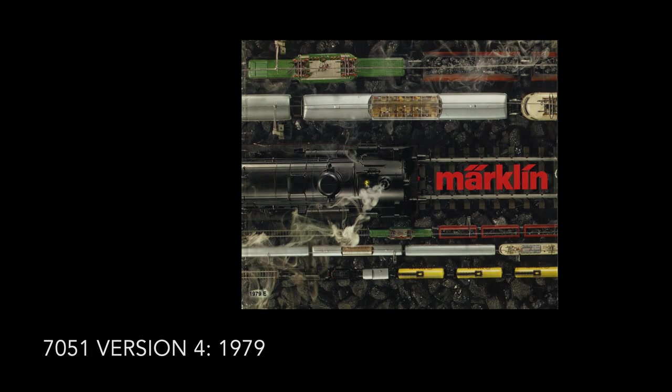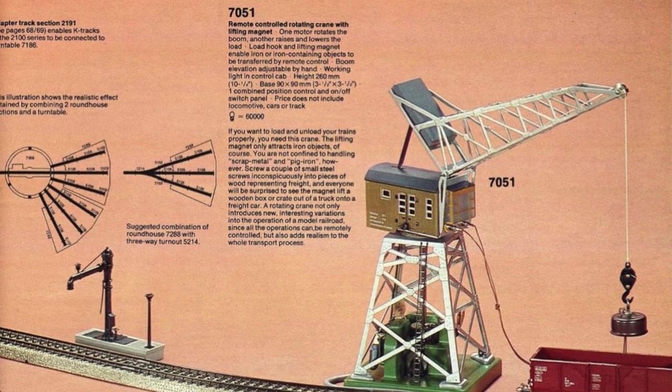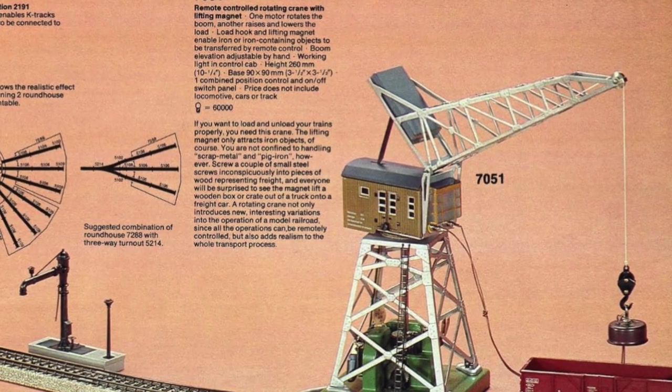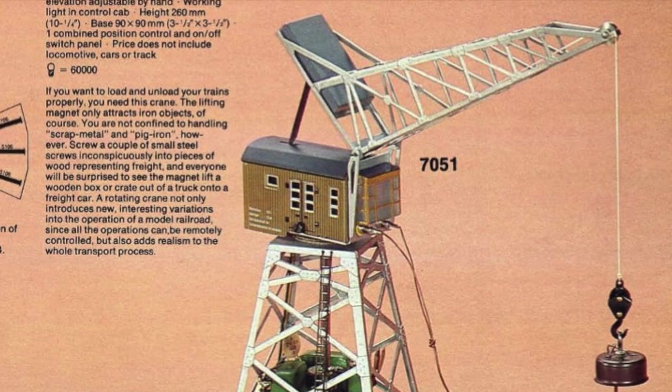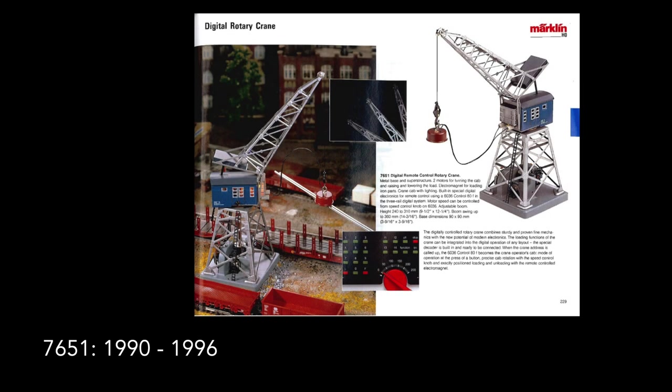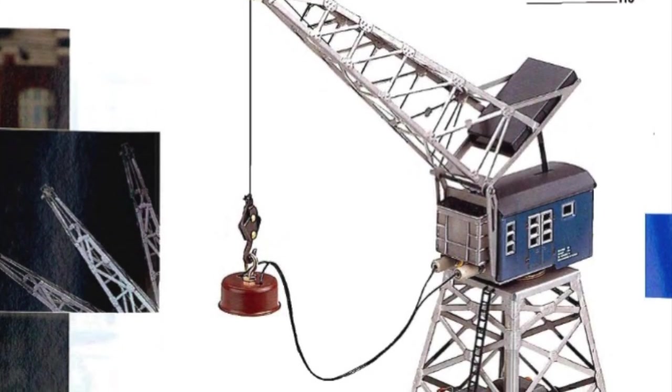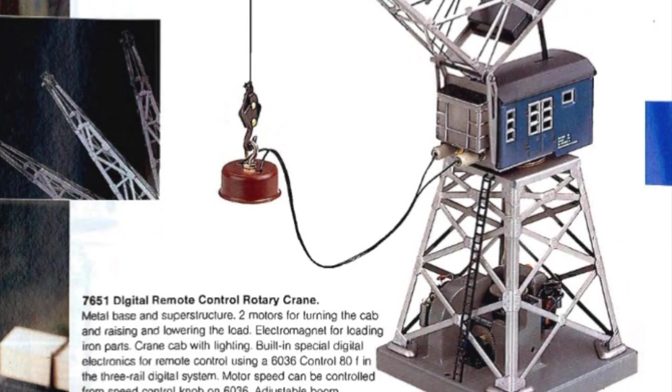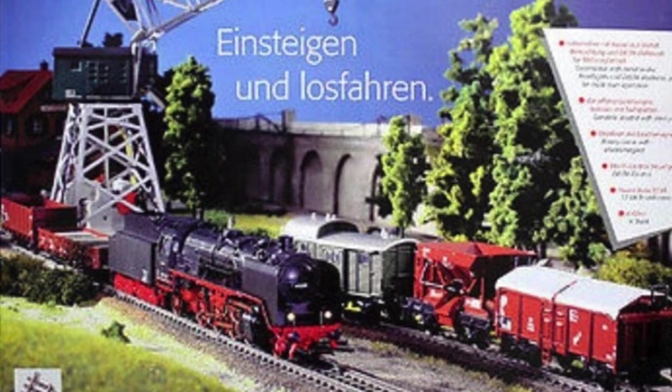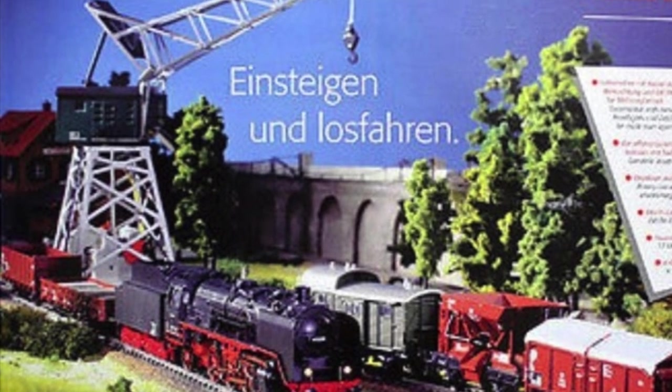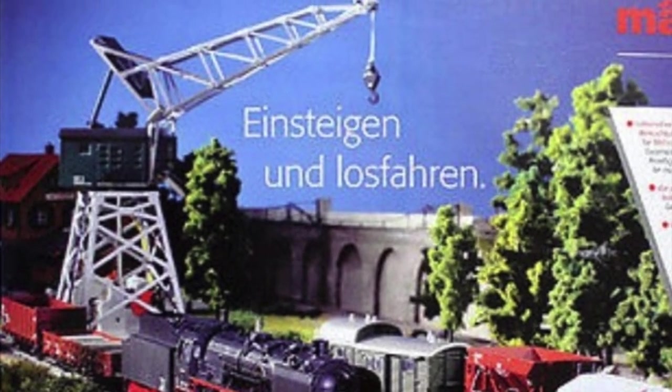When the fourth version was released. The changes made for this version were purely cosmetic. Only the colour and lettering of the cabin were changed. This version remained on sale until the product was discontinued in 2004. Between 1990 and 1996, a digital version was also available under model number 7651. The colour scheme for this version was different with a blue cabin and grey base.